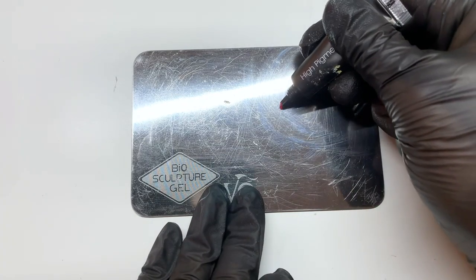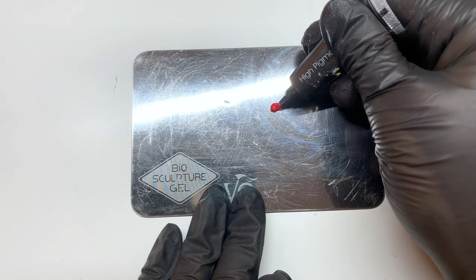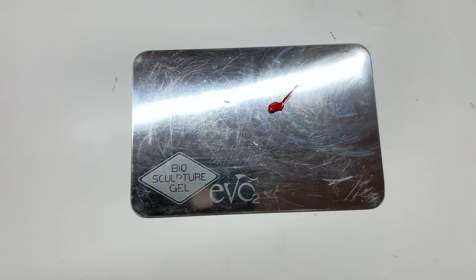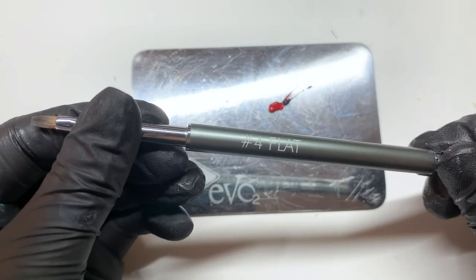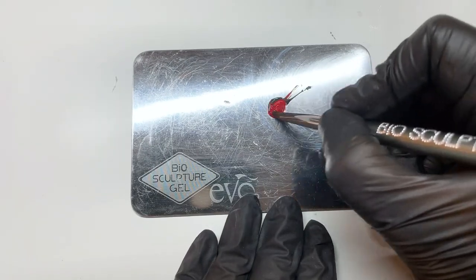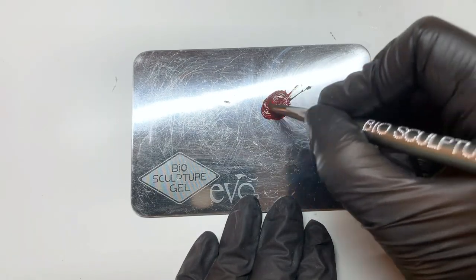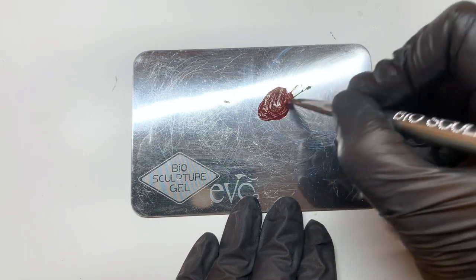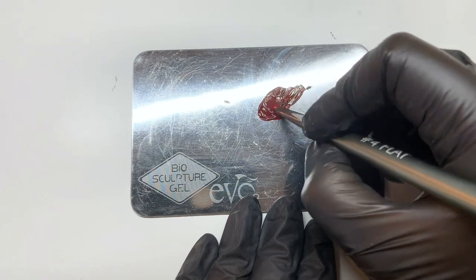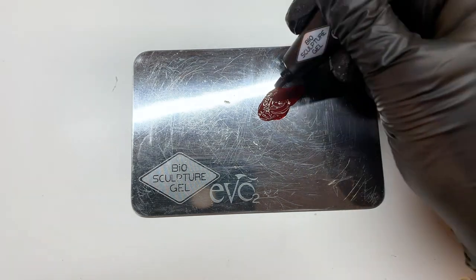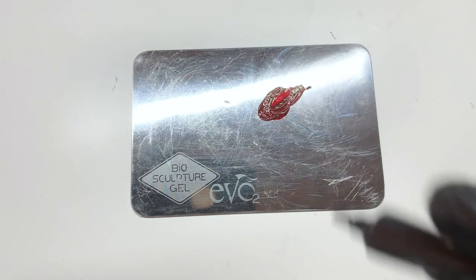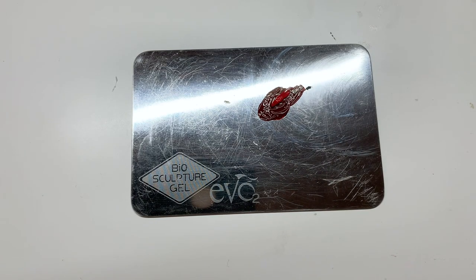For my next tutorial I'm going to be showing you that you can actually mix your high pigment gels to get that perfect color. The Biosculpture high pigment gels come in a range of different colors, for example red, blue, black, white, purple, and even gold and silver. But if you wanted a deep darker red you can actually mix the red high pigment gel with a black high pigment gel to get that perfect color. Here I wanted my red to be a little bit more vibrant so I just added a little bit more of the red high pigment gel.